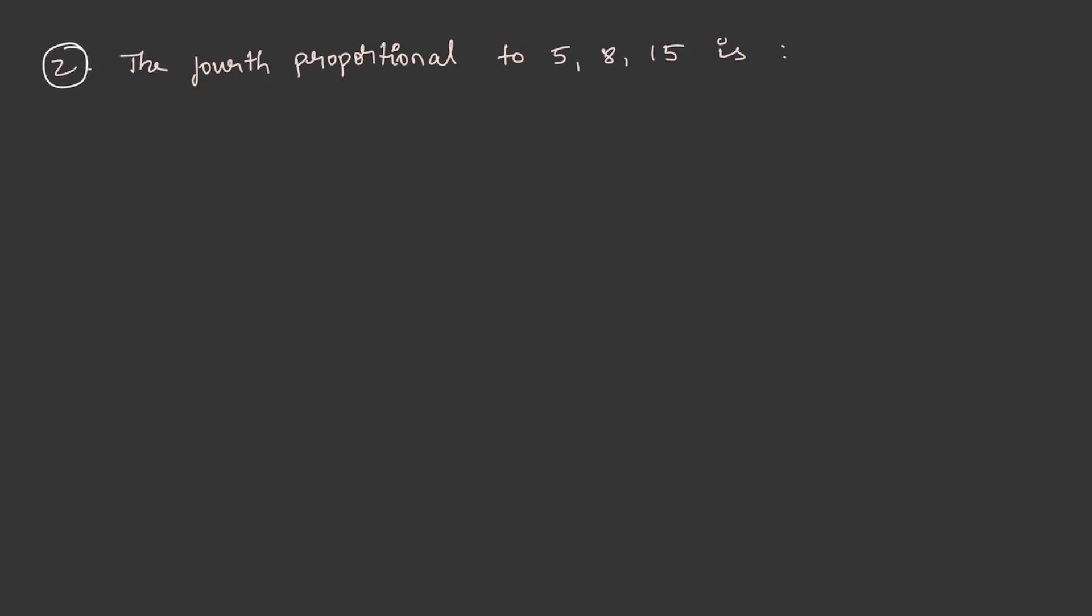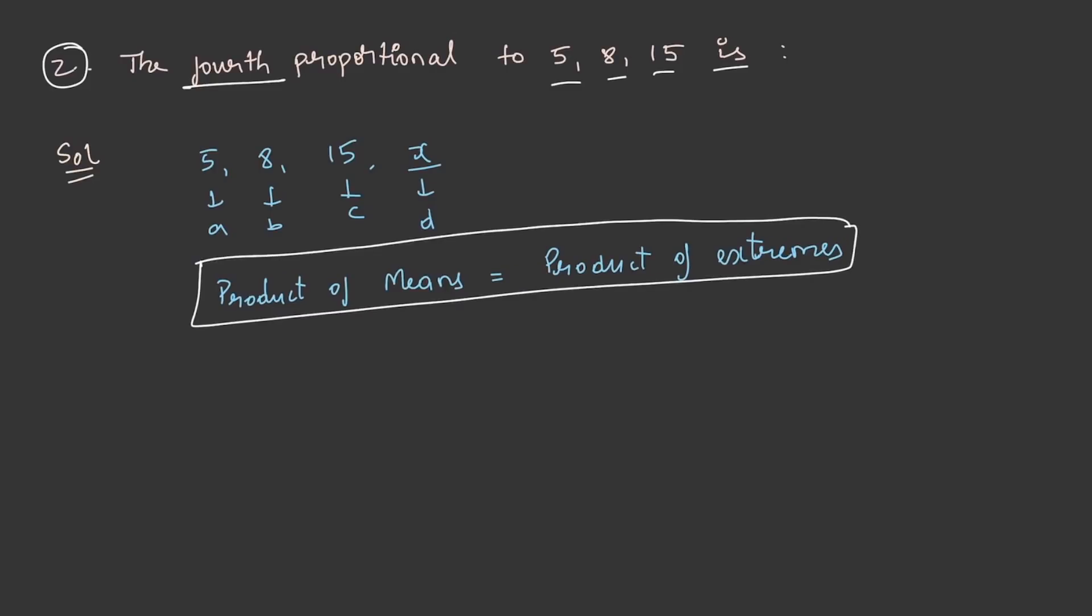Let us solve another question. The fourth proportion of 5, 8, 15 is, let us write 5, 8, 15 and take the unknown value as x. So this is A, B, C and D. If A, B, C, D are in proportion, then product of means is equal to product of extremes. From the question we can say that 5, 8, 15 and x are in proportion.